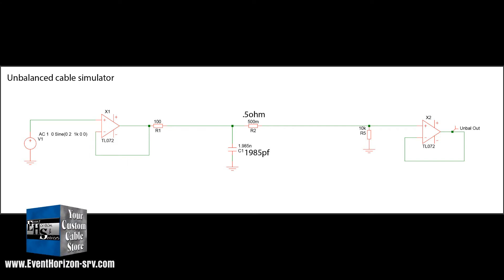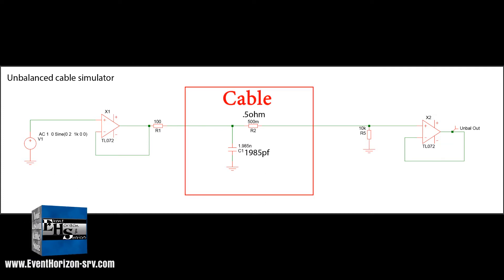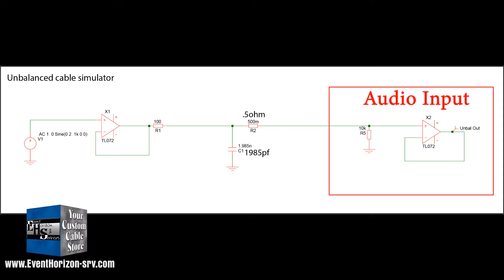On the left side is a simple audio source, like a guitar or mixer out. I can change the output impedance with the output resistor R1, which is currently showing 100 ohms. In the middle I have a simple representation of a cable. R2 represents the resistance down the length of the cable. And C1, the capacitance of the cable. On the right, a simple input circuit that I can change the input impedance on with R5. With this circuit I can simulate different pieces of gear and different cables.